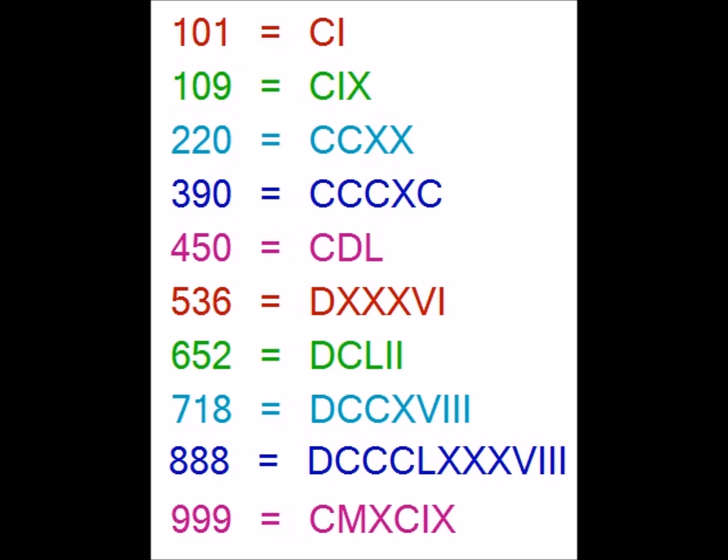For 652 we use DC for 600, L for 50, and II for 2, so DCLII gives 652. For 780 we use DCCLXXX — DCC indicating 700, L for 50, and XXX for 30.